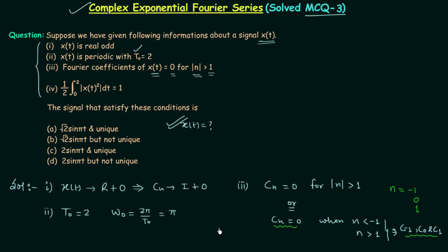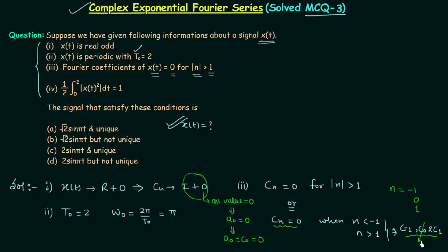Now focus on a very important point. cn is imaginary as well as odd. Since cn is odd, for odd signals the average value is equal to 0, which means coefficient a₀ is also equal to 0. We know a₀ is the same as c₀, therefore c₀ is also equal to 0. So we are left with only two nonzero coefficients: c₋₁ and c₁.